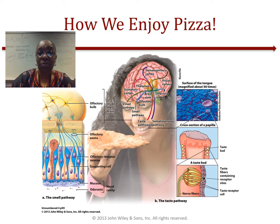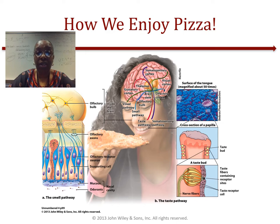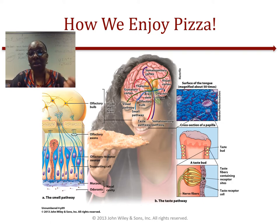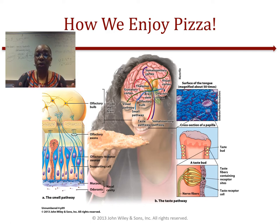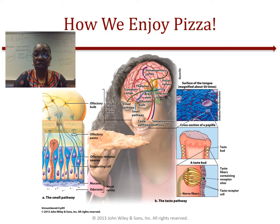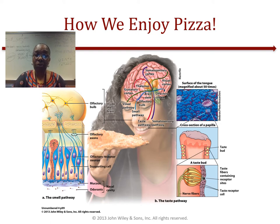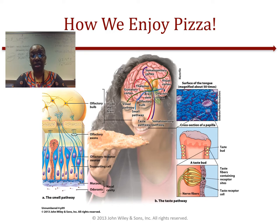Our taste receptors respond differently to food molecules of different shapes. The major taste receptors — our taste buds — are clustered on our tongues within little bumps called papillae. Scientists once believed specific areas of the tongue were dedicated to detecting bitter, sweet, salty, and other tastes, but now we know taste receptors, like smell receptors, differentiate based on the various shapes of food and liquid molecules. A small number of taste receptors are also found in the palate at the back of the mouth, so even people without a tongue can experience taste sensations.